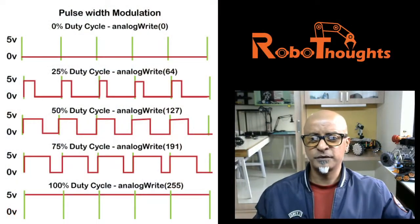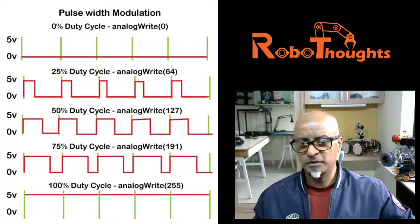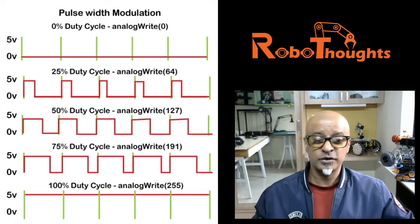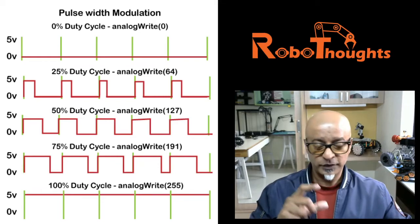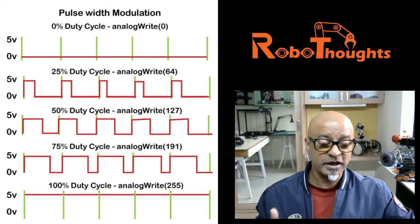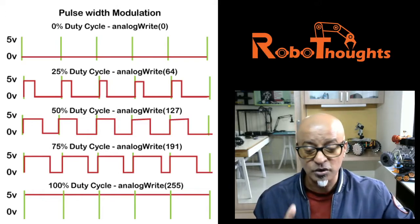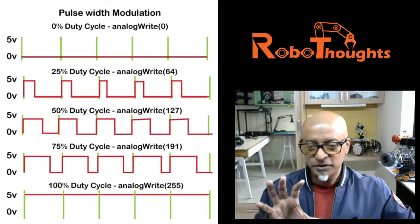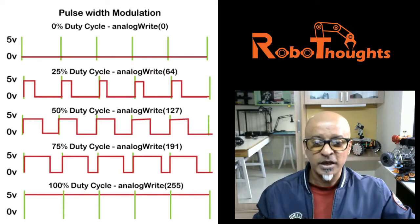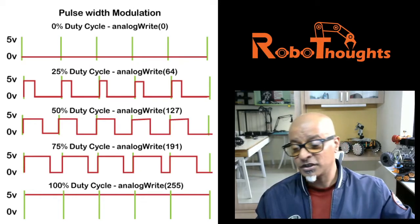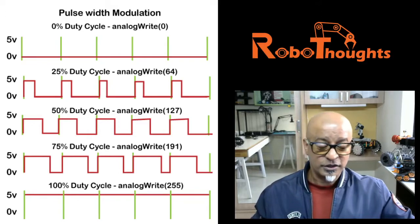For example, looking at this picture: there is a zero duty cycle, which corresponds to analogWrite equal to zero. In previous lessons I showed you what digitalWrite is, and similarly I will talk about analogWrite in upcoming lessons. For now, just grasp this picture of how PWM modulation works.